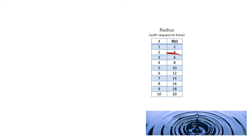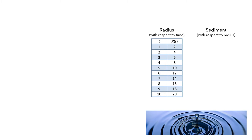For example, at three seconds the radius of the ripple was six inches. As the ripple travels, it displaces sediment on the bottom of the pond. We'll let s of r be the volume of the displaced sediment when the radius is r inches. Then, the total displacement of sediment is given by the function d that is formed by composing s and r, so d of t is s of r of t.